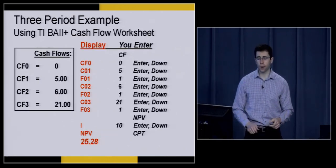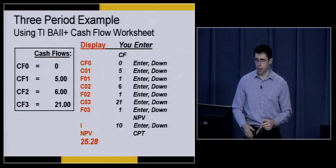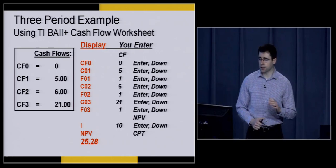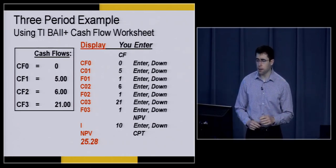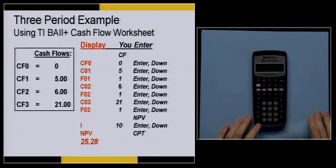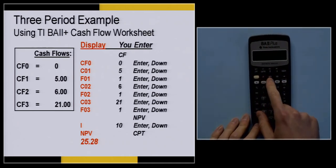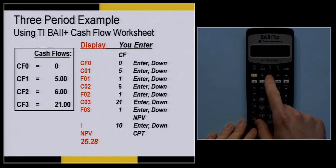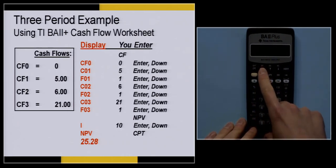Now let's talk about how we actually calculate intrinsic value using the BA2 calculator. We're going to use the CF and NPV buttons. Right above the time value of money buttons you'll see the CF button and the NPV button — these are used to enter cash flows and calculate intrinsic value. In our previous example, we had a $5 cash flow in year one, a $6 cash flow in year two, and a $21 cash flow in year three.